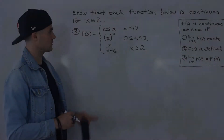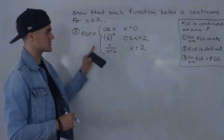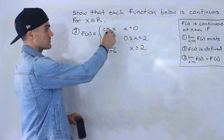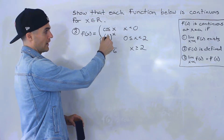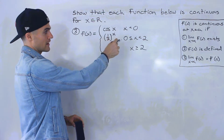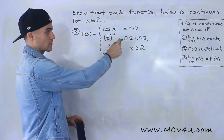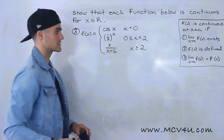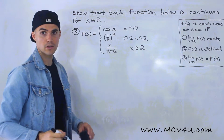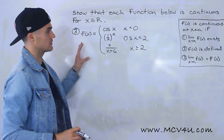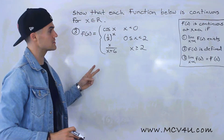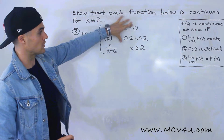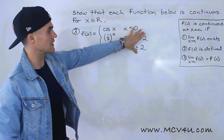Number three: we have this piecewise function. Notice that it has three pieces — cos(x) when x is less than zero; one-half to the power of x when x is greater than or equal to zero but less than two; and x over (x+6) when x is greater than or equal to two. This one's going to take a little more work than the previous two. There are two meeting points: at zero and at two.